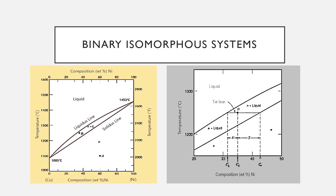The line separating the L and alpha plus L phase fields is termed the liquidus line. The liquid phase is present at all temperatures and compositions above this line. The solidus line is located between the alpha and alpha plus L regions, below which only the solid alpha phase exists. The solidus and liquidus lines intersect at the two composition extremities, corresponding to the melting temperatures of the pure components — 1085°C for pure copper and 1453°C for pure nickel.